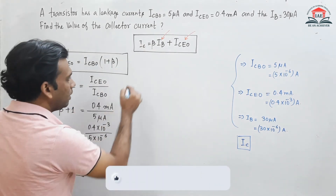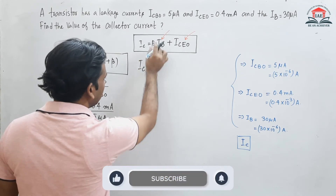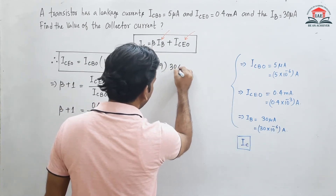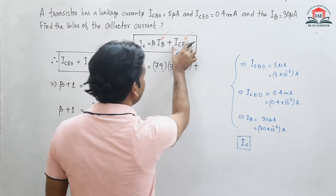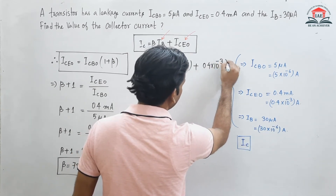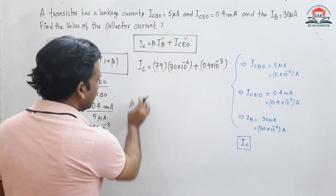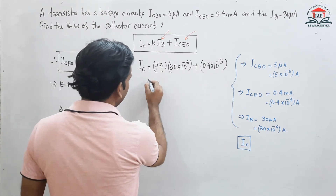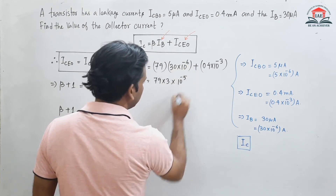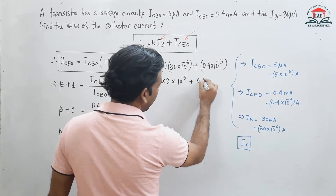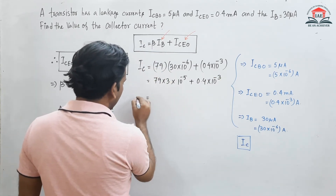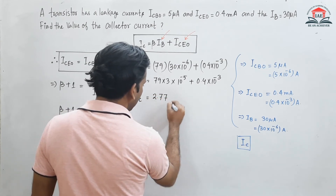Now we use beta equals 79 in the equation IC equals beta × IB plus ICEO. IB is 30 × 10⁻⁶ and ICEO is 0.4 × 10⁻³. Doing this calculation, the IC value comes out to be 2.77 milliampere.